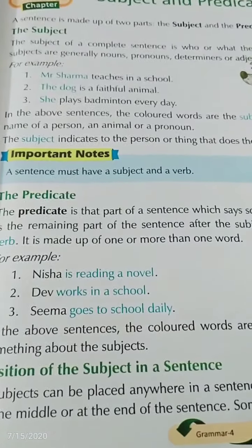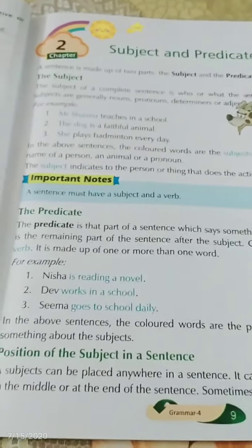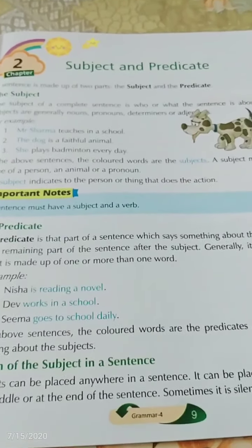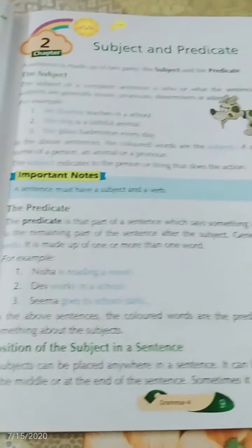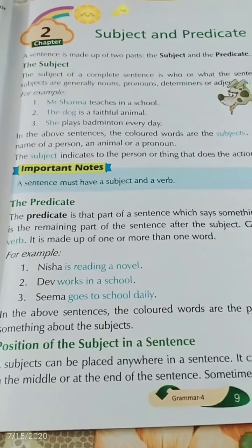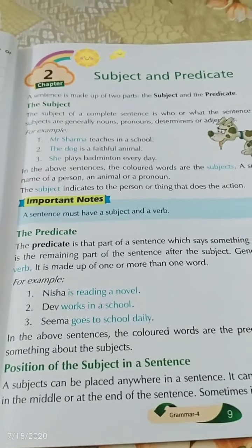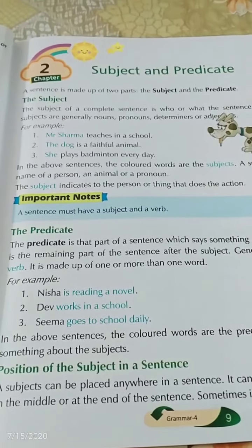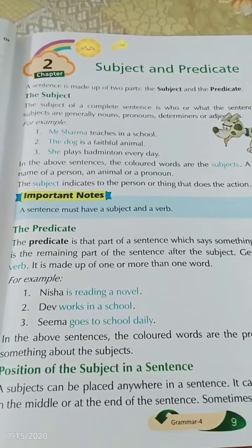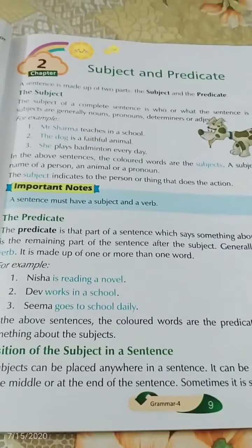Hope you all have understood. In the above sentences, the words given in blue are the predicates, as these words say something about the subject. For example, 'Nisha is reading a novel' — the predicate 'is reading a novel' tells about Nisha, and Nisha is the subject.